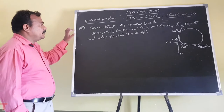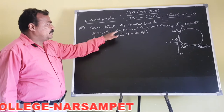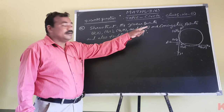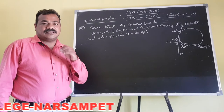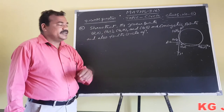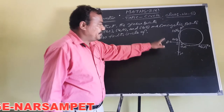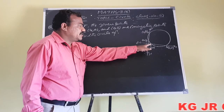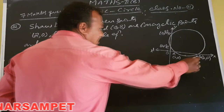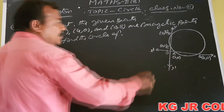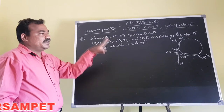Now the second problem: Show that the given points (2,0), (0,1), (4,0), and (0,8) are concyclic points, and also find the circle equation. Here is a rough diagram. The point (2,0) and (4,0) are on the x-axis, and (0,1) and (0,8) are on the y-axis. We have to show all four points lie on the same circle.